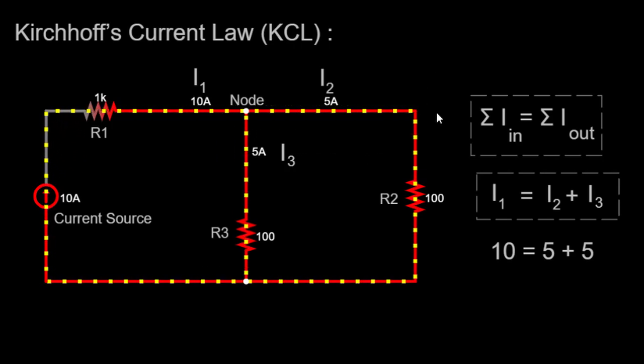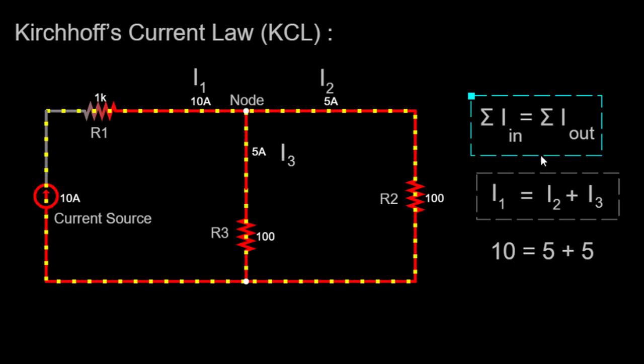In simpler terms, the total current flowing into a node is equal to the total current flowing out of that node. This principle is based on the fundamental law of conservation of charge, which ensures the charge is neither created nor destroyed within a circuit.